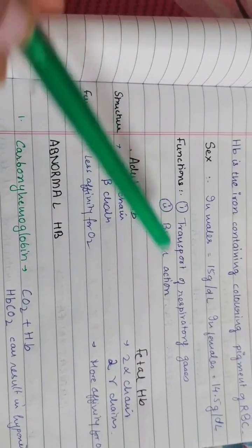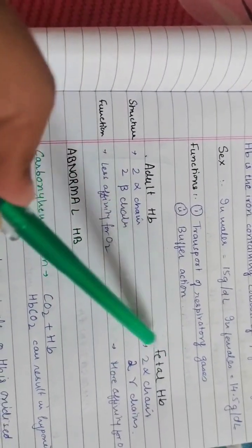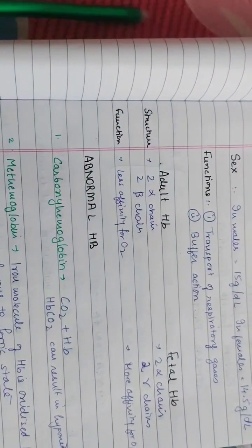In adults, there are 2 alpha and 2 beta chains. In fetuses, instead of 2 beta chains, there are 2 gamma chains. Fetal hemoglobin has more affinity towards oxygen.